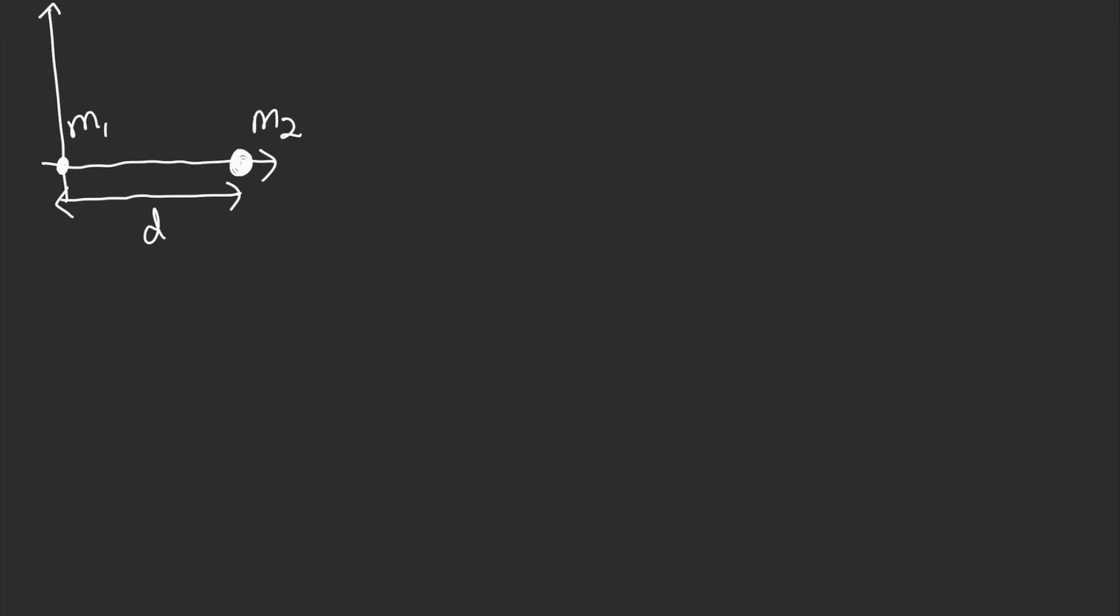So we have arbitrarily chosen the origin of an x-axis to coincide with the particle mass M1. So if we have this system set up, we're going to call this the y-axis and this the x-axis.